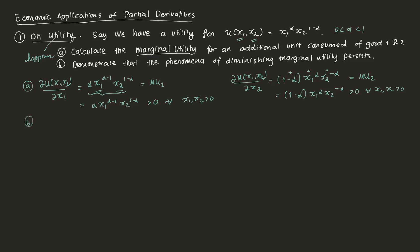For part B, we demonstrate diminishing marginal utility using the second-order direct partial derivative. Taking the second derivative with respect to x1 squared, we differentiate the marginal utility of good 1 again with respect to x1. We're left with alpha times alpha minus 1 times x1 raised to alpha minus 2 times x2 raised to 1 minus alpha, which simplifies to alpha squared minus alpha times x1^(alpha-2) times x2^(1-alpha). Since alpha lies between 0 and 1, alpha squared is less than alpha, so this entire term is negative for all x1, x2 greater than 0.